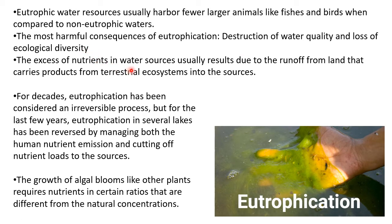The excess of nutrients in water sources usually results from runoff from land, such as excessive fertilizers washed off from agricultural fields. Eutrophication has been considered an irreversible process for decades, but in recent years it has been reversed in several lakes by managing human nutrient emissions and cutting off nutrient loads from other sources. Algal blooms require nutrients at certain ratios, and when concentrations are high, they grow and flourish very fast.